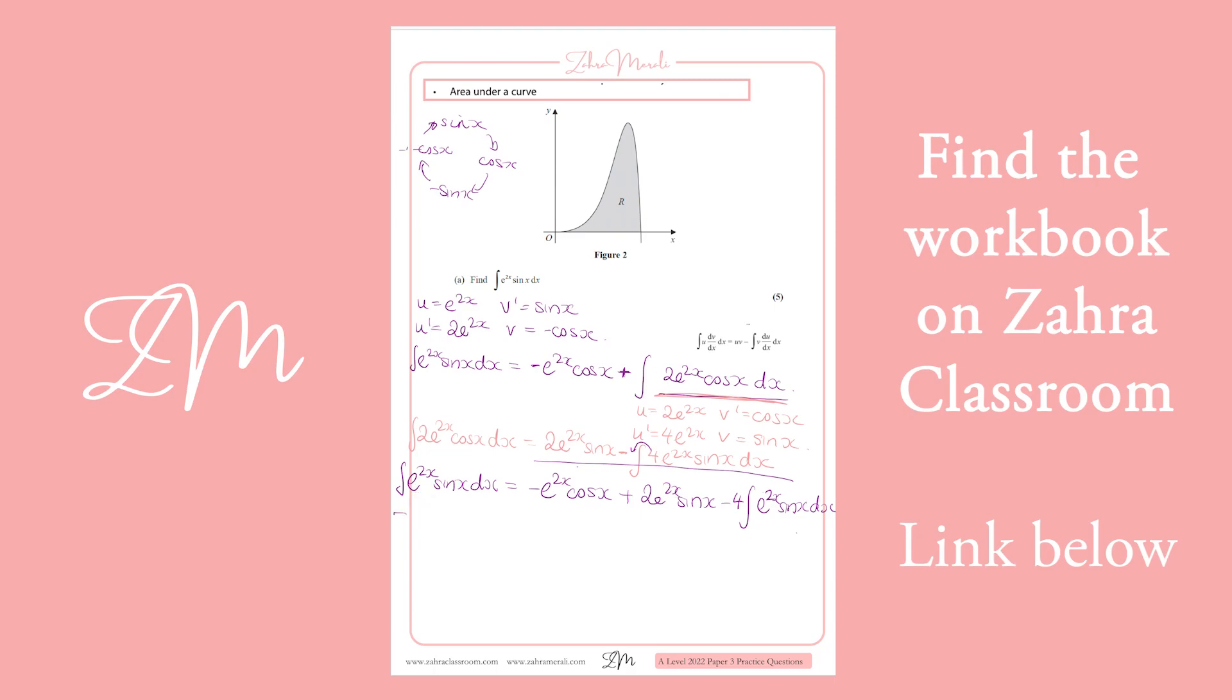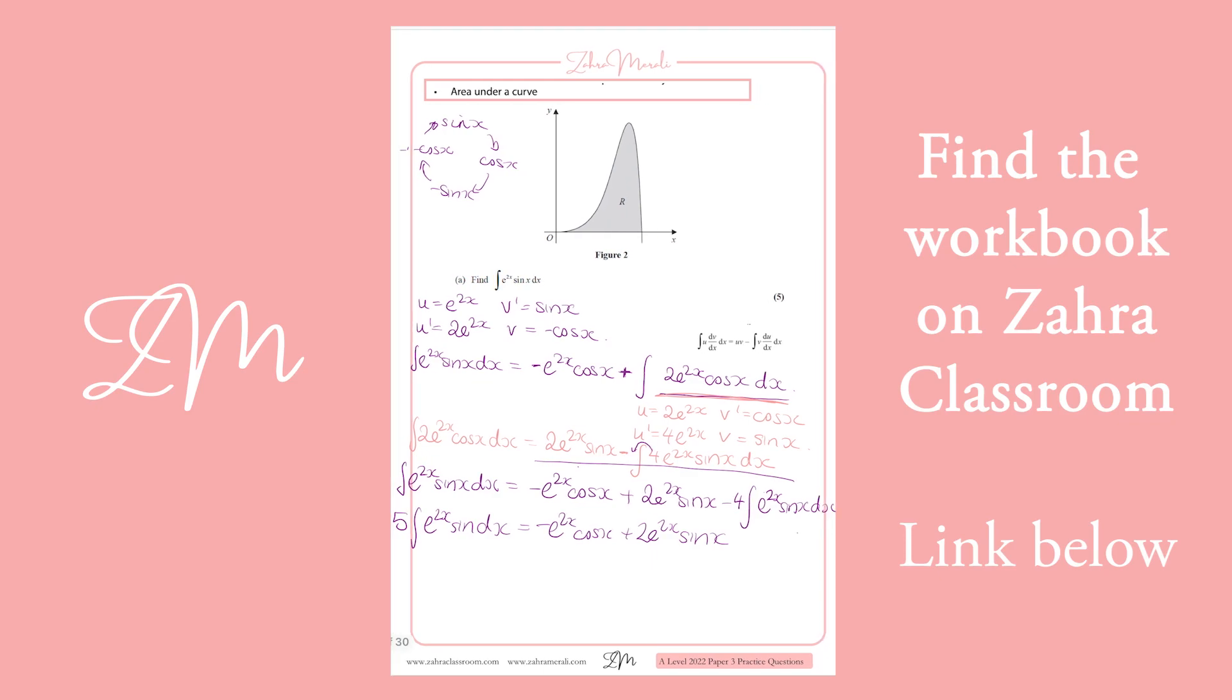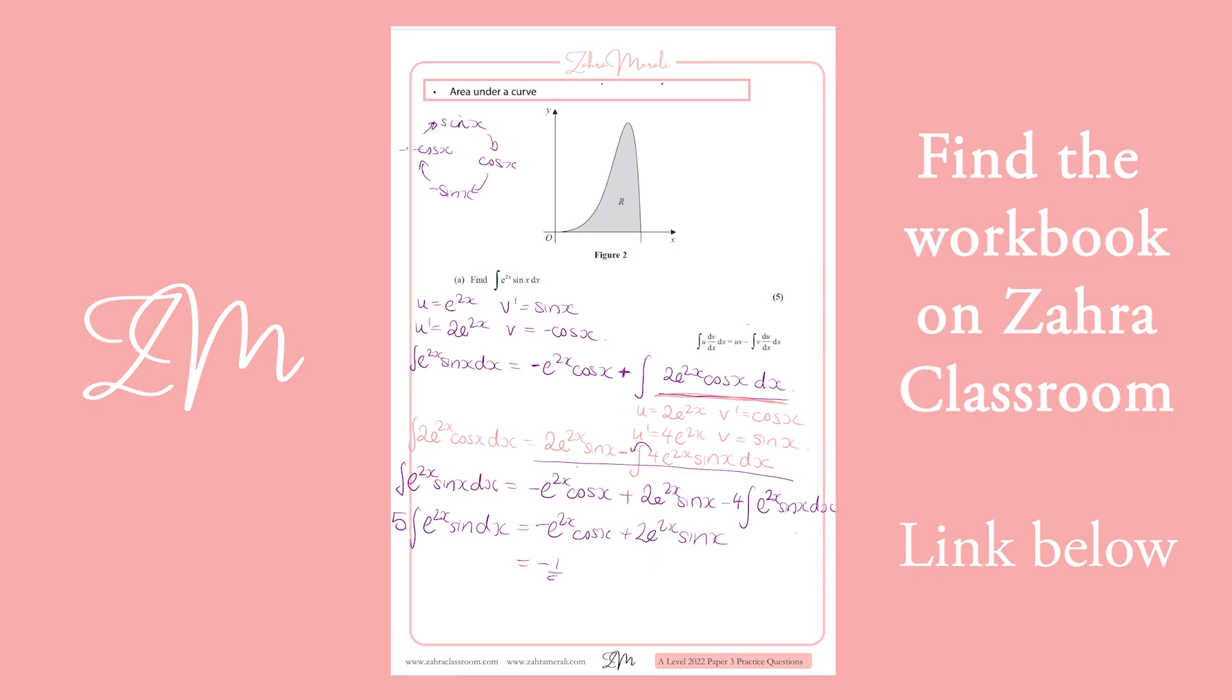So hopefully now you can see you've got that on one side and you've got minus 4 of the same thing, so we can put them all together onto that side to give me 5 times the integral of e to the 2x sine x dx equals minus e to the 2x cos x plus 2 e to the 2x sine x. Now I can divide by 5 and I end up with minus 1/5 e to the 2x cos x plus 2/5 e to the 2x sine x, and I'm going to put plus C there. That gives me the integral of e to the 2x sine x dx, and that's my answer.